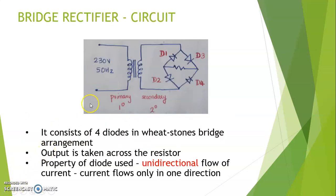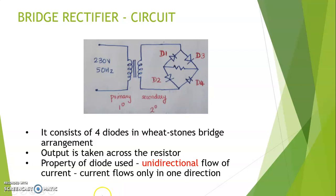This is the circuit of the bridge rectifier. The transformer is used to step down the voltage from 230V to the required rating. The bridge circuit consists of four diodes in a Wheatstone arrangement, and the output is taken across a resistor. The diode has the property of unidirectional flow of current, which allows current to flow in only one direction when forward biased.